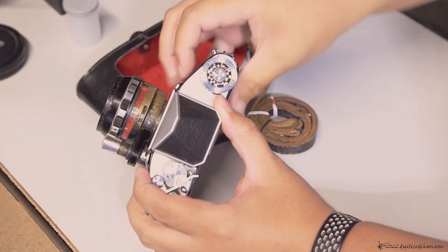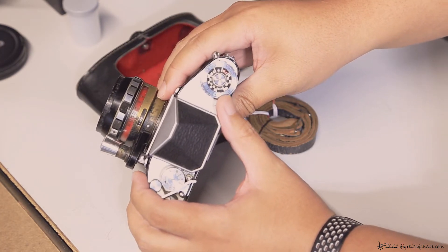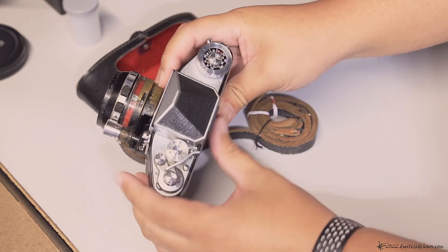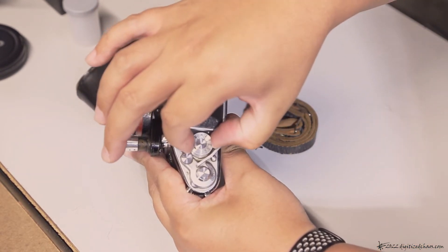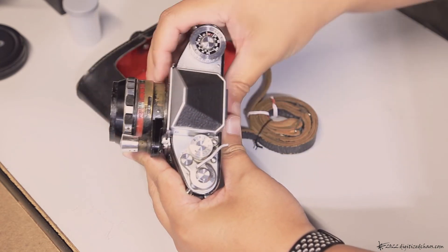...set mine to 400 to remind me that I'm shooting 400 film. Set my shutter speed to 500.